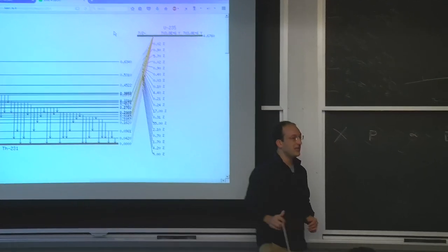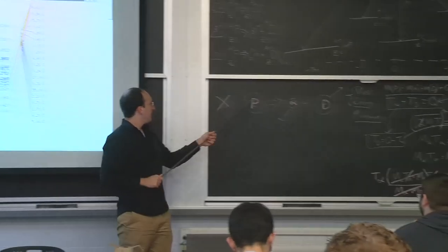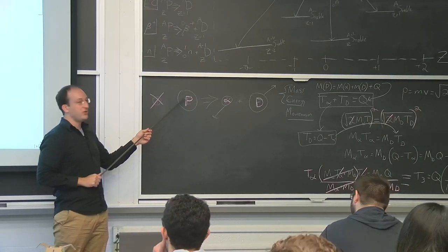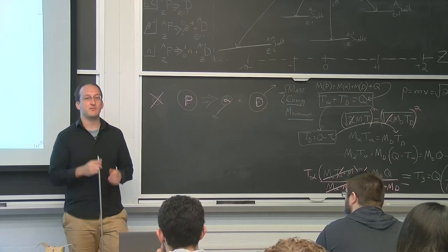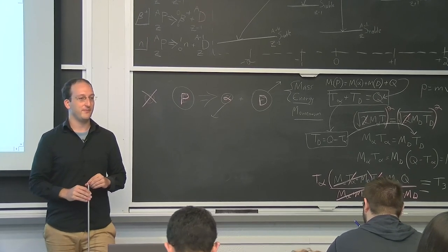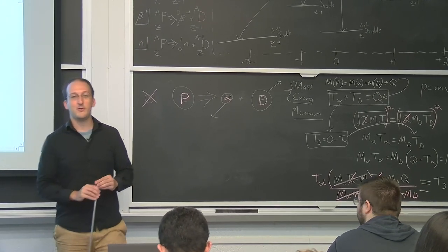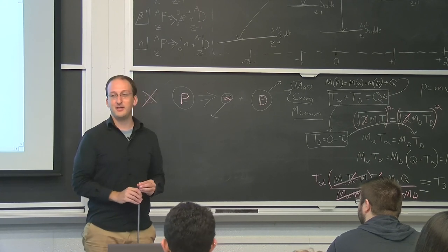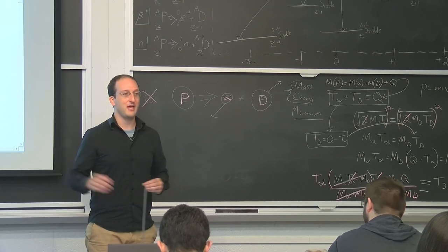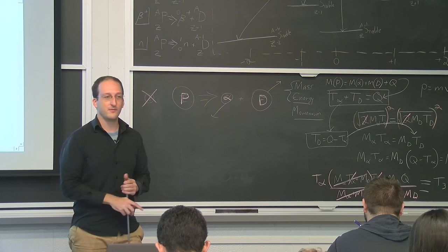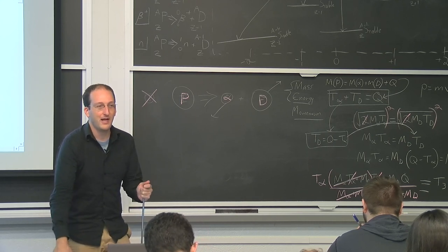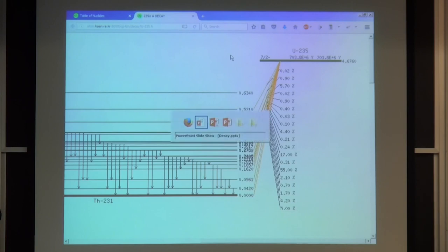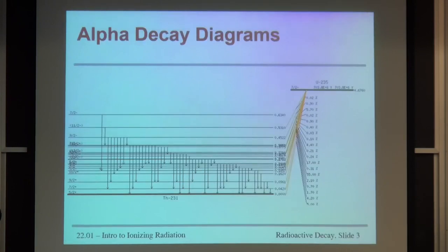That's why you're never going to see an alpha particle that's got the same energy as the initial minus the final energy. Because the recoil nucleus, or the daughter nucleus, takes away some of that kinetic energy in order to conserve the momentum of the system that was initially at rest. Any questions before I move on?